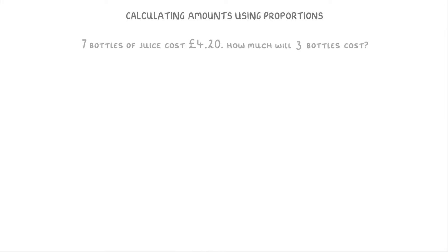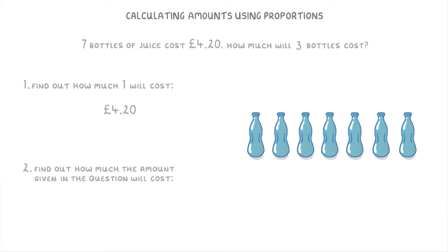Now the key idea with this type of question is to first of all figure out how much just one of them will cost. And then we can use that figure to find out how much any other amount of them will cost. For example, if £4.20 is the cost of seven bottles, then to find the cost of a single bottle, all we do is divide the £4.20 by seven, telling us that each bottle costs 0.6 pounds, or 60p.